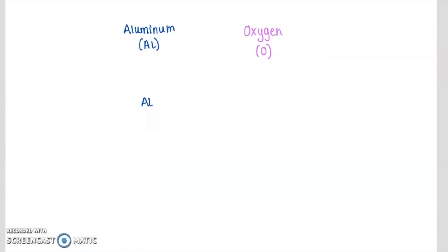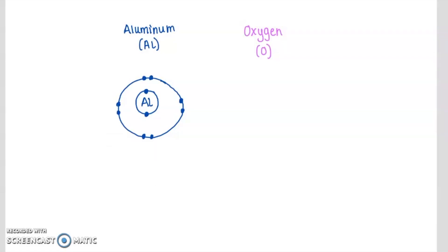I'm going to take a look at aluminum in the periodic table. Aluminum has an atomic number of 13, which means it has 13 protons. In a neutral aluminum atom, that also means it would have 13 electrons. I'm also noticing that aluminum is in group 13, or main group 3, which reminds me that I should get 3 valence electrons for anything in this group. Let's draw our Bohr model. For aluminum, we have 13 total electrons: the first shell gets 2, the next shell holds up to 8, bringing us to 10 total, and then 11, 12, 13. This is my model for aluminum — 13 total electrons with 3 valence electrons.